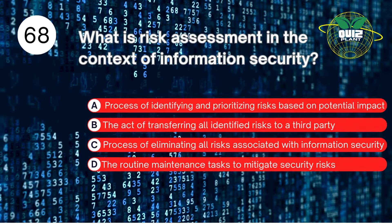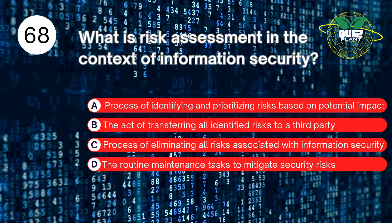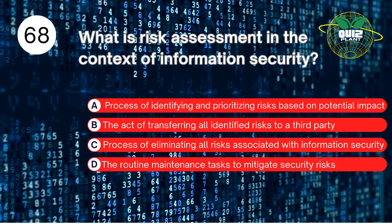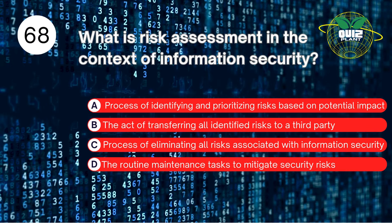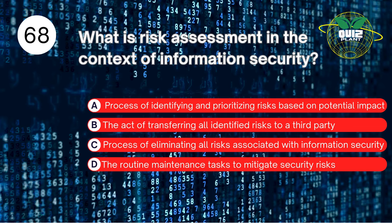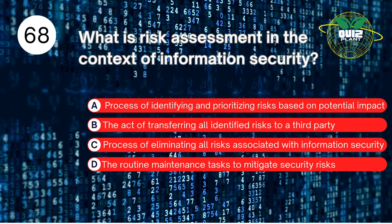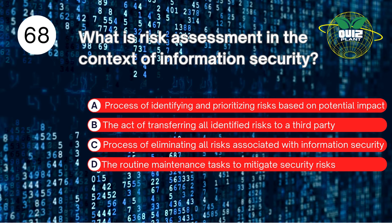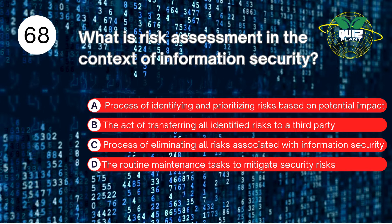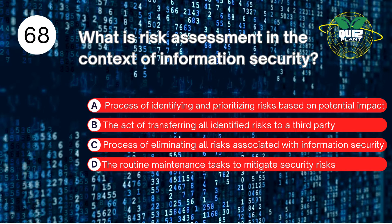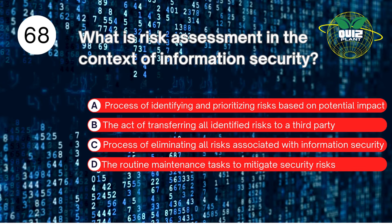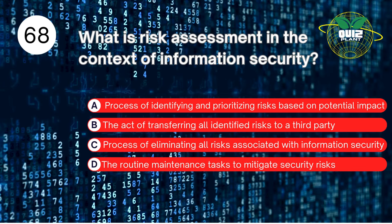Number 68. What is risk assessment in the context of information security? A. The process of identifying and prioritizing risks based on potential impact. B. The act of transferring all identified risks to a third party. C. The process of eliminating all risks associated with information security. D. The routine maintenance tasks to mitigate security risks. The answer is A. The process of identifying and prioritizing risks based on potential impact.